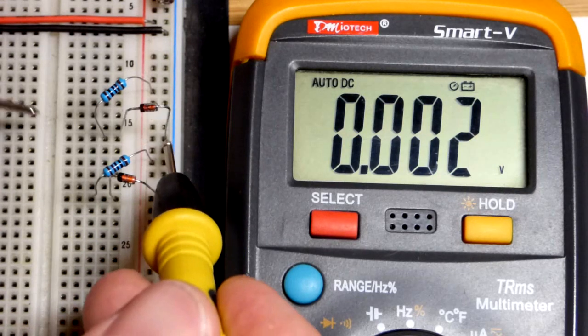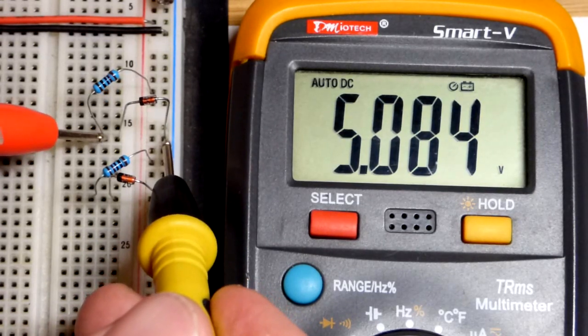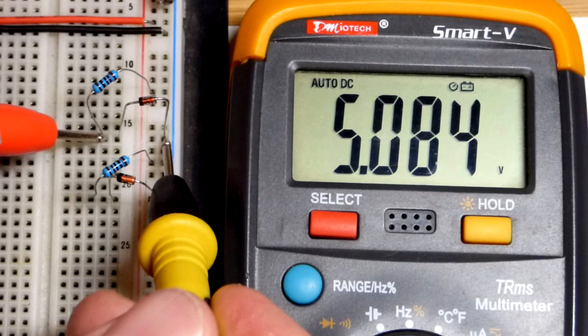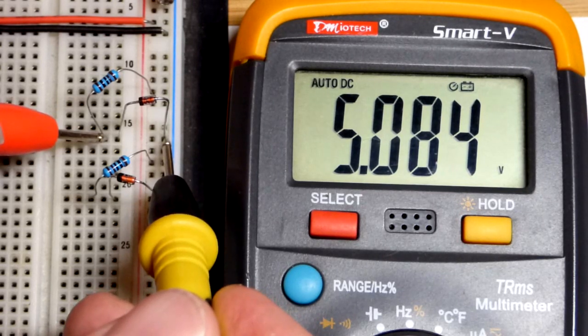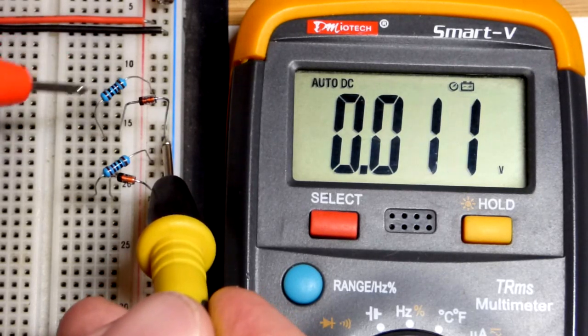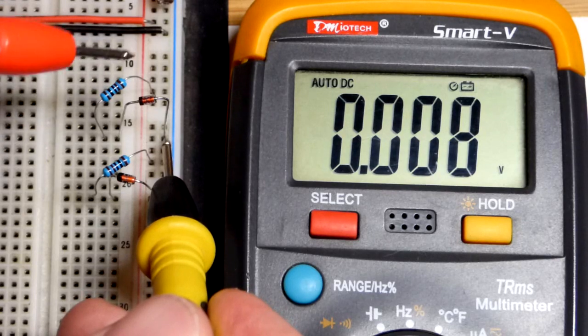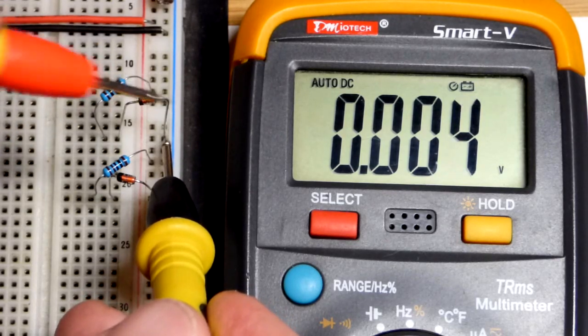And then we got this one up here. It is a 5.1 volt Zener diode. So we're pretty close there. But if we want it closer to 5.1 volts, we could use a bit lower value resistor there to get a little more current flowing through it. And that'll raise it up a little bit.